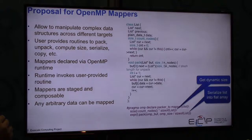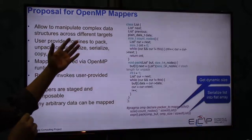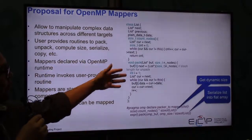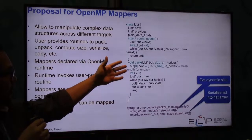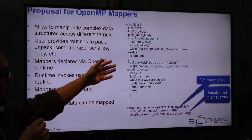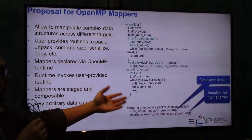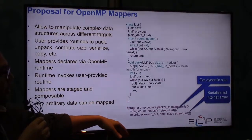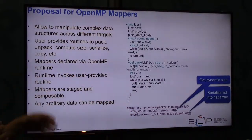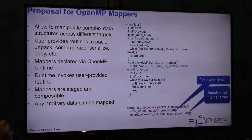Another direction is the introduction of OpenMP mappers for addressing the deep copy problem. The basic idea is that when a user has a particular data structure or class, the user provides small routines to extract information about the class. These routines are later used by the OpenMP runtime to collect, for instance, the total memory size required by the class, and to perform packing, unpacking, transferring, and linearizing — raising the level of abstraction so users don't have to deal with low-level details.